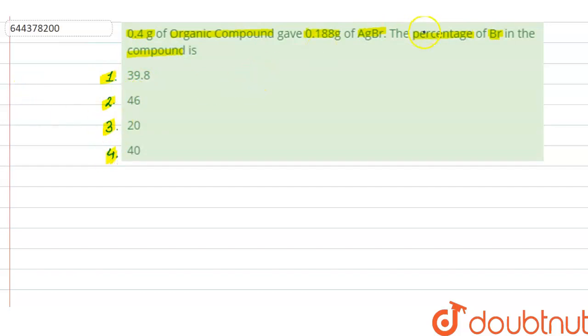In this question, we have to find out the percentage of bromine in the compound. It is given that 0.4 gram organic compound gave 0.188 gram of AgBr. So basically, the weight of silver bromide is given which we are getting in product. So what we will do is find out the weight of bromine which we are getting in product.